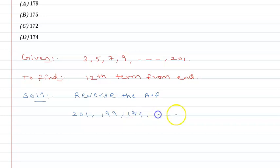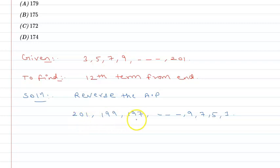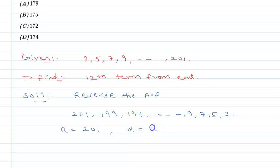The reversed AP goes from 201 down to 3. The common difference is 199 minus 201, that is minus 2.